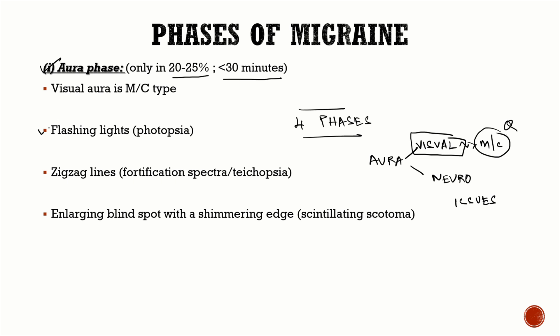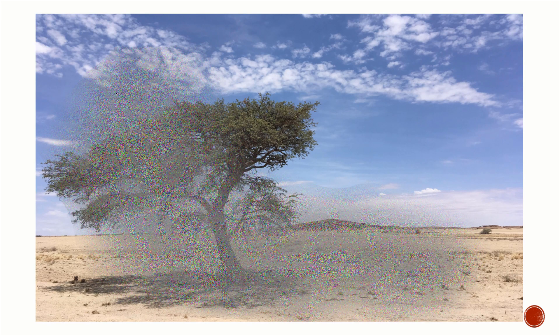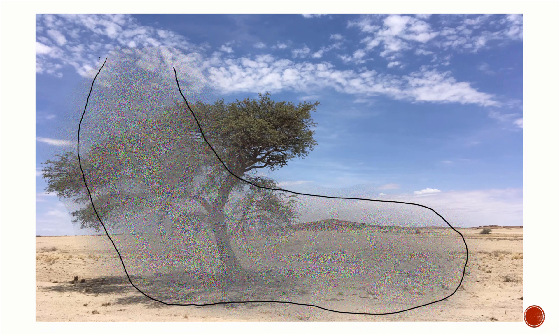The different types of visual aura include flashing lights or photopsia, zigzag lines in the visual field known as fortification spectra, and an enlarging blind spot with a shimmering edge known as scintillating scotoma. These are the commonly seen visual auras in migraine.